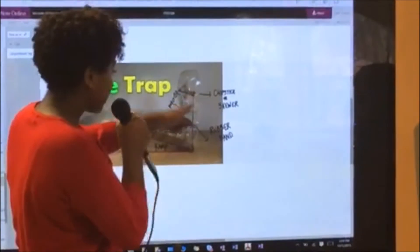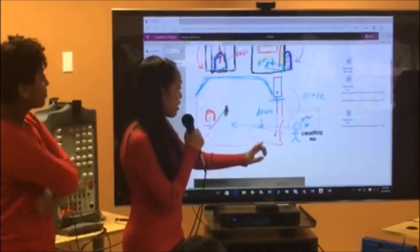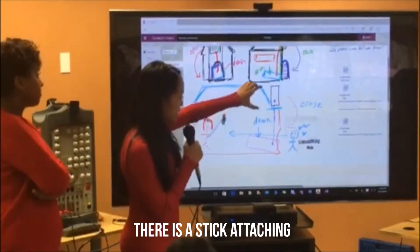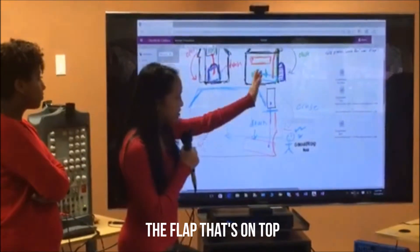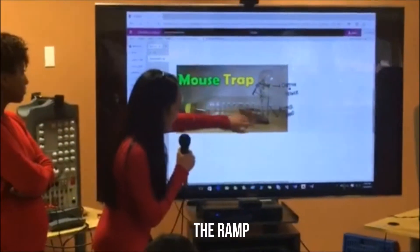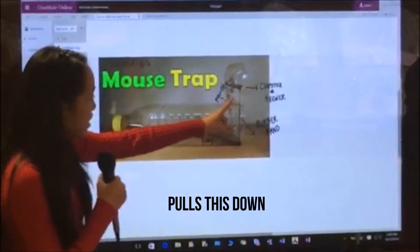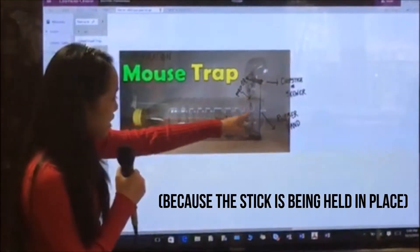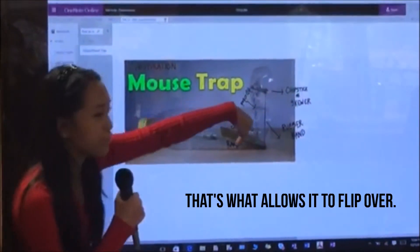So how it works is that there is a stick attaching the flap that's on top, and it's attached to the ramp. Once he steps inside, the ramp pulls this down, and then that's what allows this. Because the stick is being held in place, that allows it to flip over.